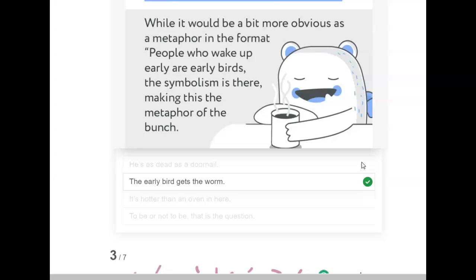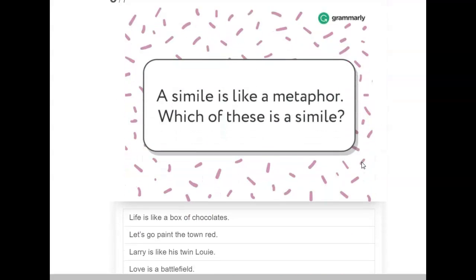While it would be a bit more obvious as a metaphor in the format people who wake up early are early birds, the symbolism is there making this the metaphor of the bunch. So it doesn't always have to say one thing is another. Sometimes you have to read between the lines. The early bird gets the worm means the person who wakes up early like an early bird gets the worm or gets all the success or the thing that is happening.